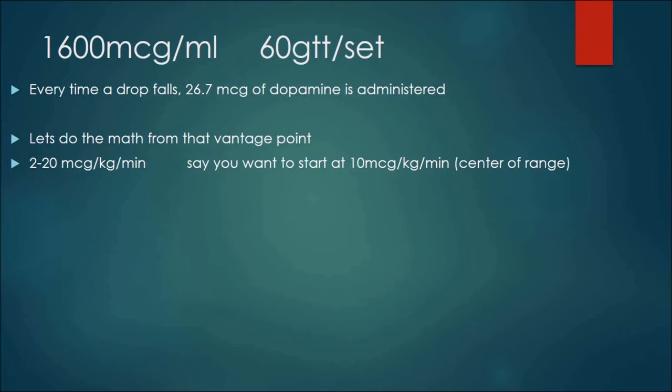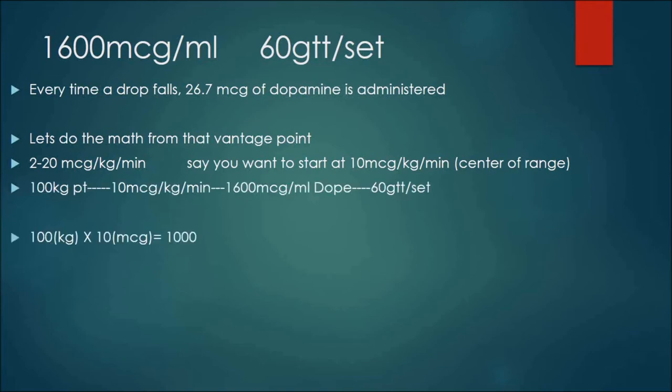So let's just use a 100 kilogram patient for the demonstration to make the math easier on the first try. So we have a 100 kilo patient. We're going to give them 10 micrograms. That's a thousand. Take that thousand and divide it by 26.7. That's it. You get 37 drops a minute, just that fast.